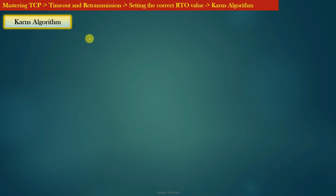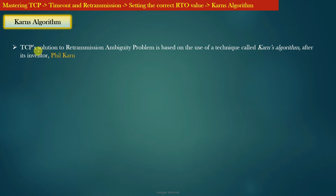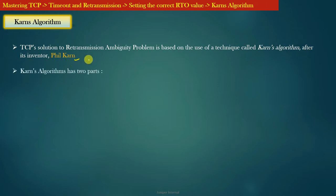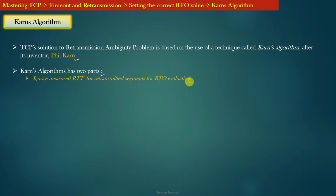Let us discuss Kahn's algorithm, which is TCP's solution to the retransmission ambiguity problem. It is based on a technique named after its inventor Phil Kahn. Kahn's algorithm actually has two parts. The first part says: ignore measured RTT for retransmitted segments for RTO evaluation.